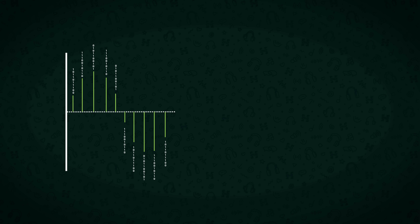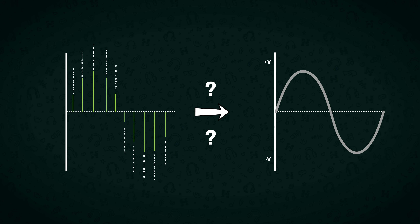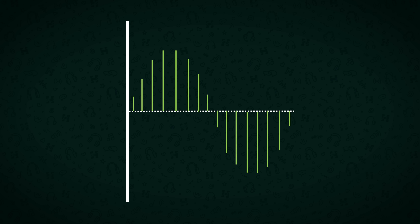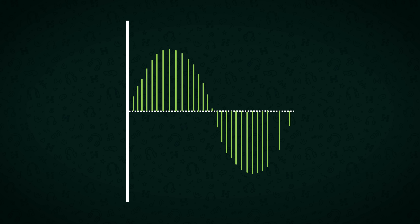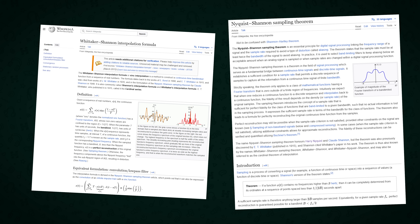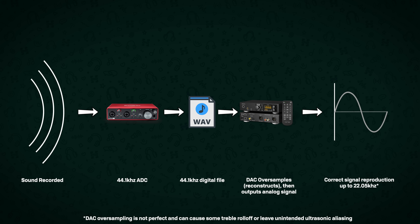But then how do we convert this digital sampled data back to analog? Well, that's where the DAC comes in. The first thing a DAC will do is take this 44.1 kilohertz time series of samples and play a mathematical game of connect the dots — figuring out where the bits in between should be and adding new samples. This is called oversampling. The math behind this is pretty complex and beyond the scope of this video, but all you need to know is it works. By doing this we can accurately reconstruct the original signal's content up to half the sampling rate that it was recorded at.